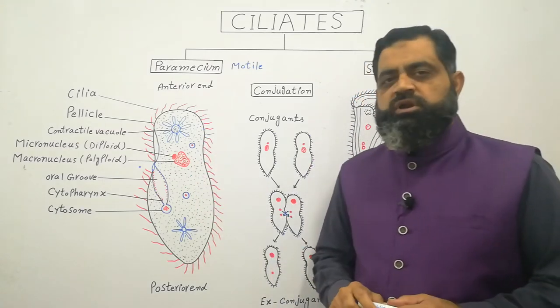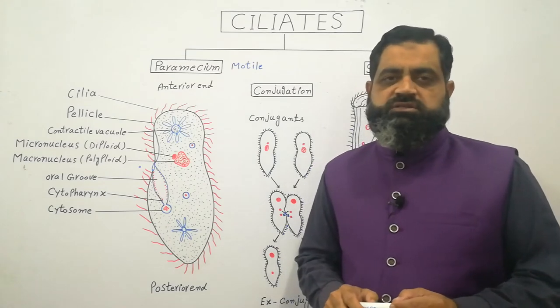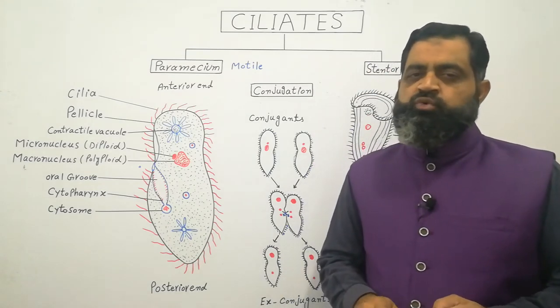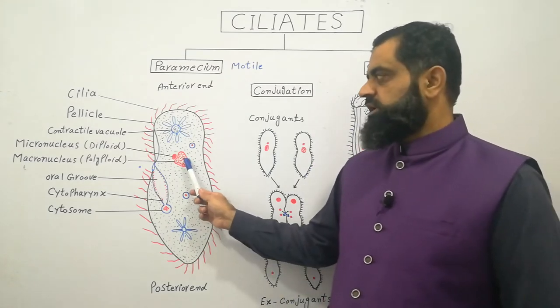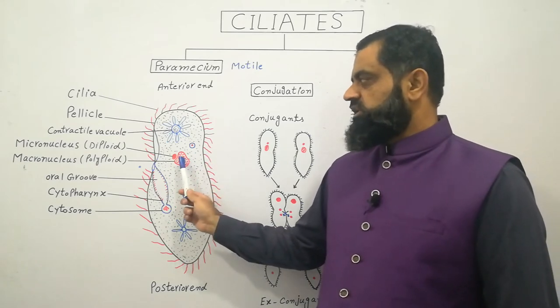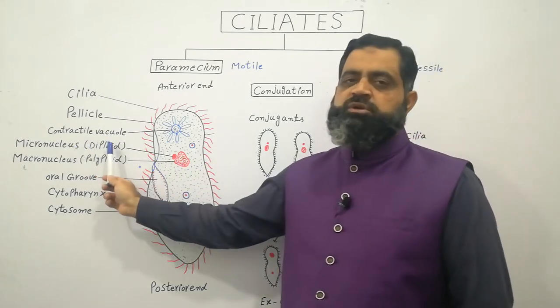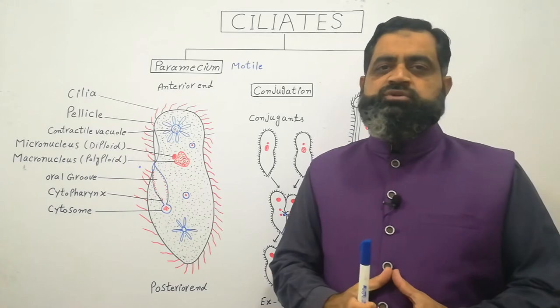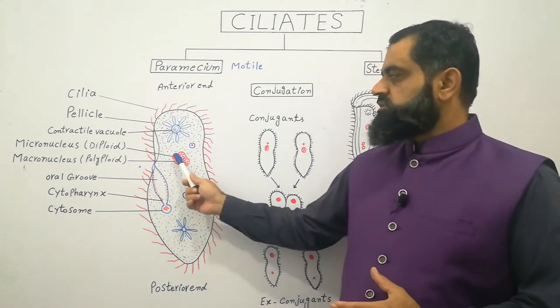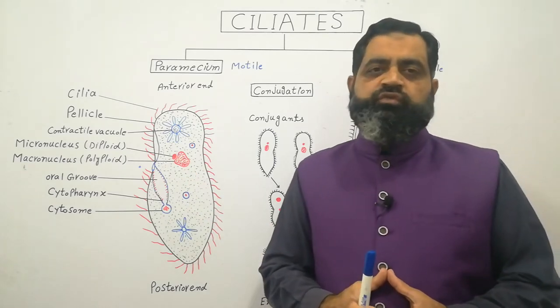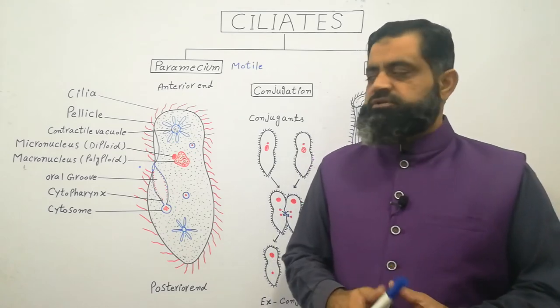The main important organelles present in the ciliates are their nuclei. There are two types of nuclei present in paramecium or ciliates. One is micronucleus which is diploid. Diploid means having two sets of chromosomes. These micronuclei are involved in sexual reproduction and conjugation.